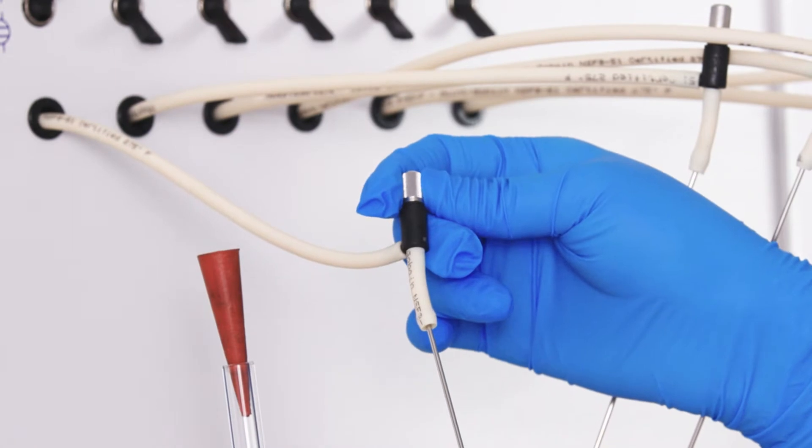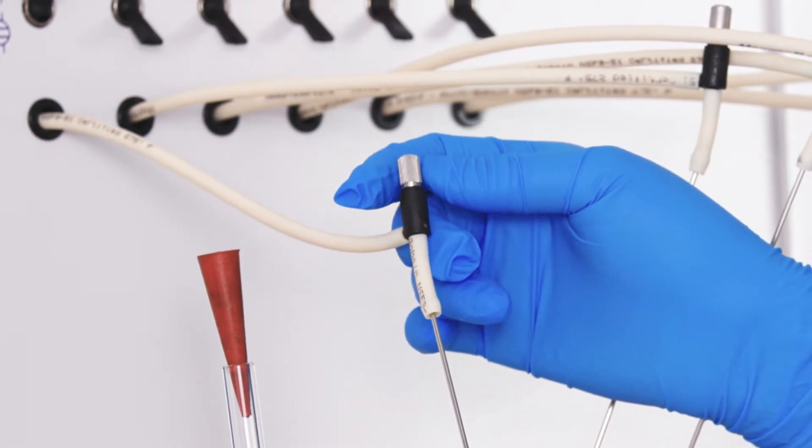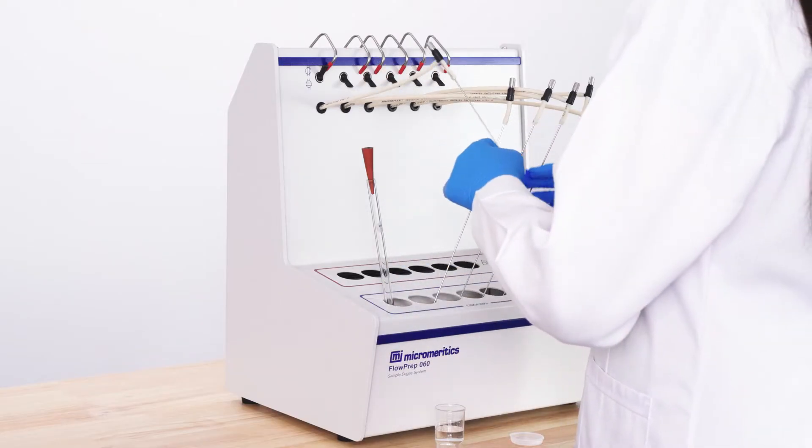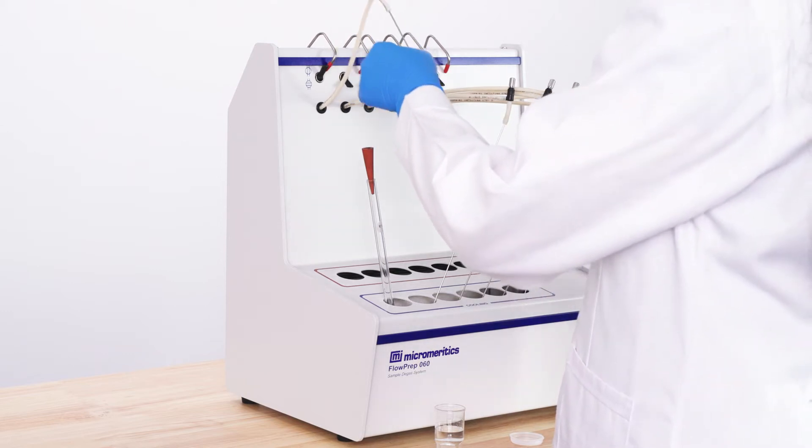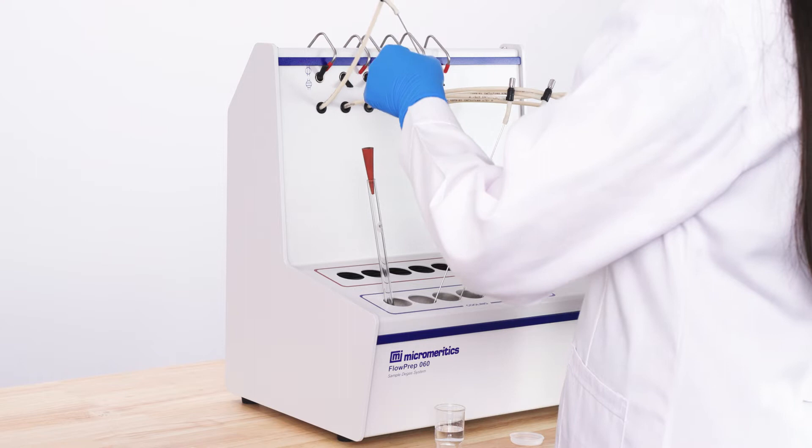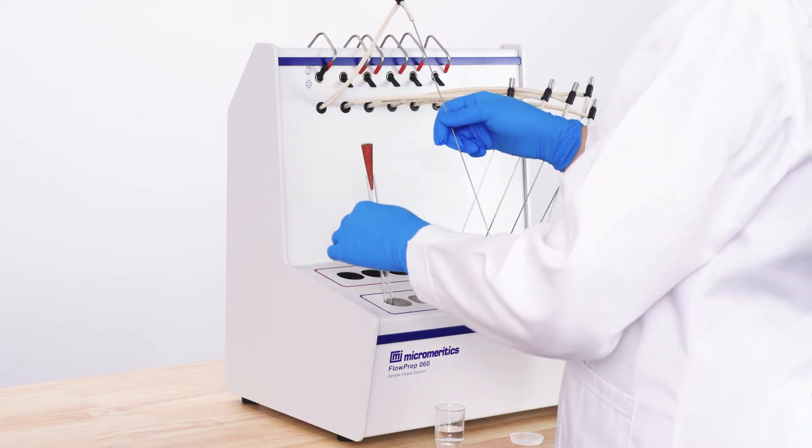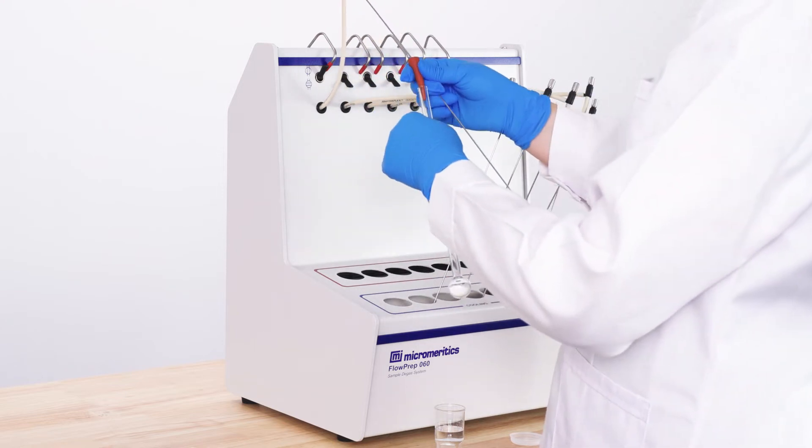Turn the knob on the top of the probe to adjust the flow. Wipe the tip clean and insert it into the bottom of the sample tube.